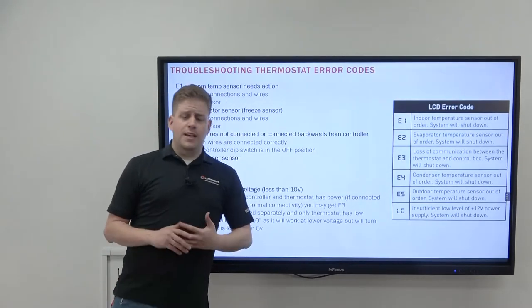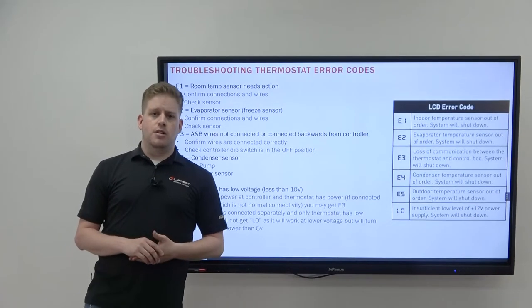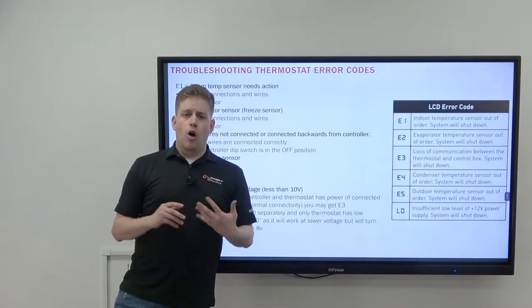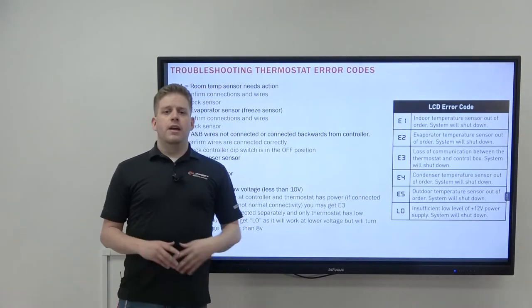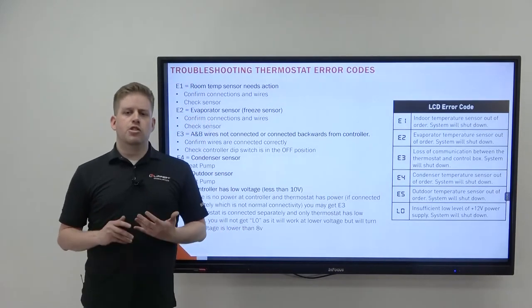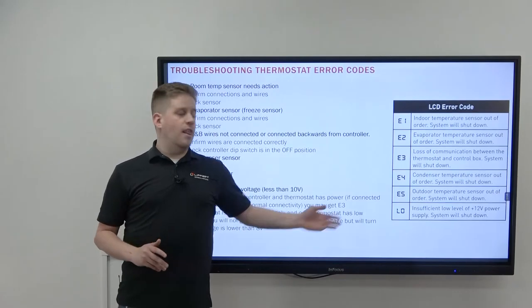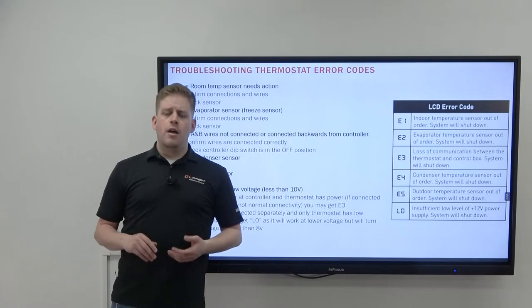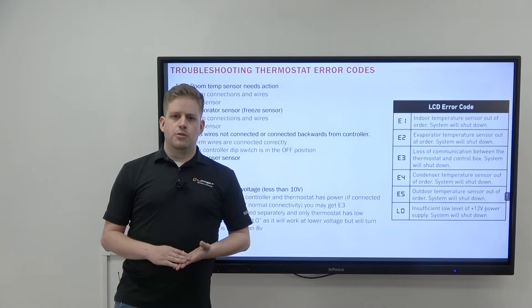E4 and E5 are for condenser and outdoor ambient sensors. Currently, our air conditioners do not have either of these sensors. The control box will only look for these error codes during normal operation if you accidentally turn on the heat pump dip switch. So if you're getting an E4 or E5 error, make sure to check your dip switches.